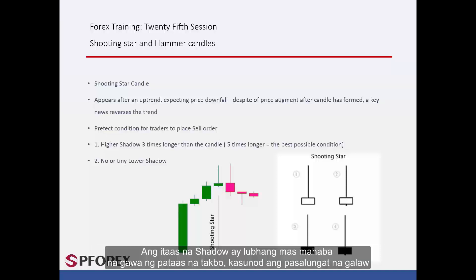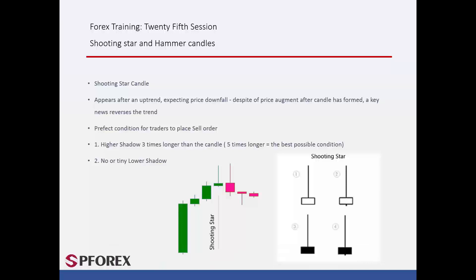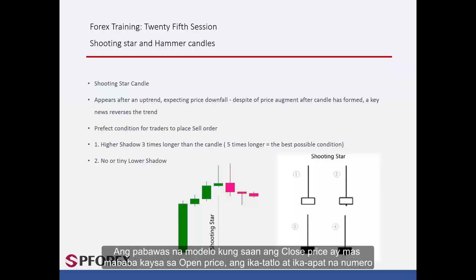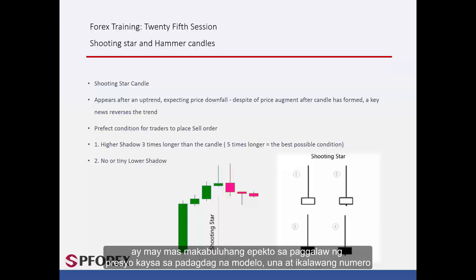The upper shadow is considerably longer, made by an upward trend followed by a reversal movement caused from a significant news or event in the market. The decreasing model, in which the close price is lower than the open price, has a more considerable effect on price movement.